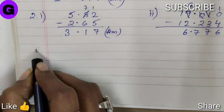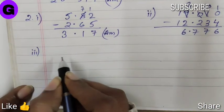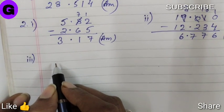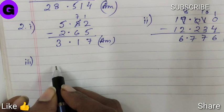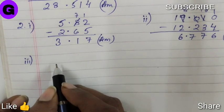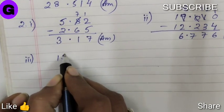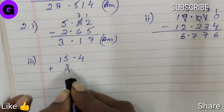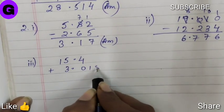Sum number three, it is 15.4 plus 3.015 minus 14.75. So first we are going to do the addition. So for that, let us arrange 15.4 plus 3.015.